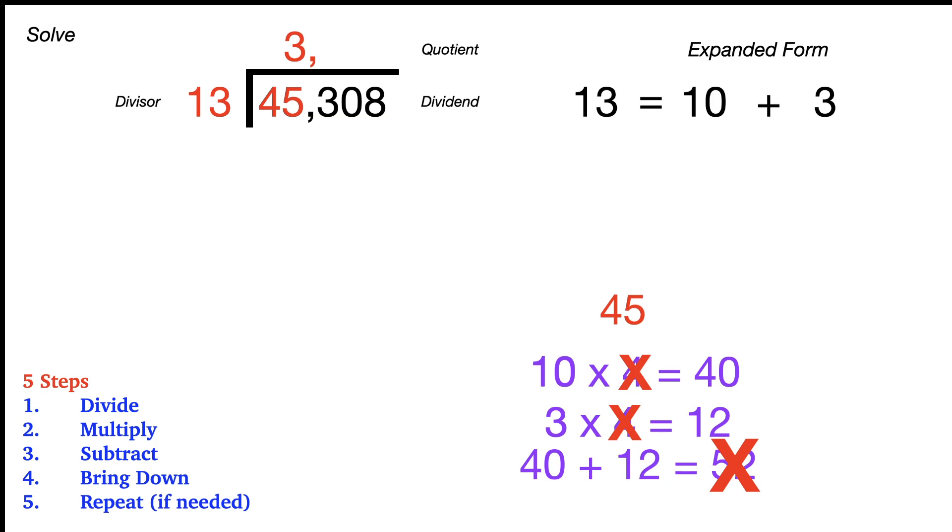So we'll put the 3 at the top, and now we're going to multiply 13 times 3 is equal to 39. The 39 goes below the 45, and then we subtract, and we get 6. All right, bring down the 3, and now we have 63. I'm just going to call it 63, even though the comma's there.